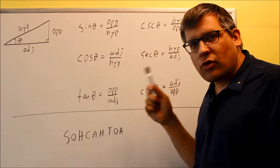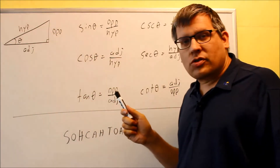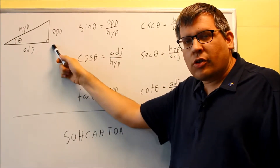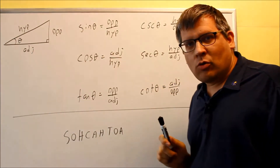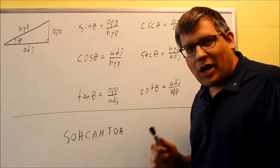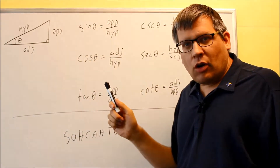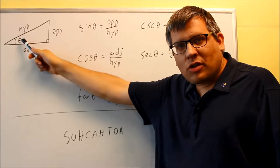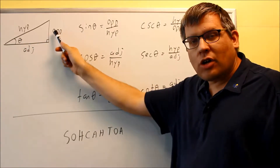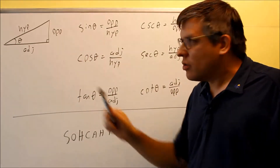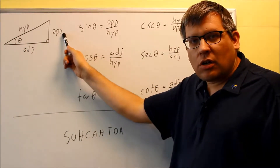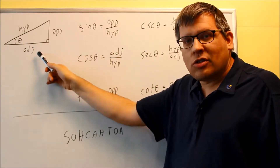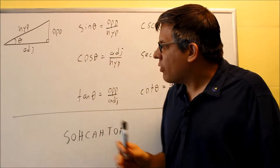In order to use these definitions, we first have to label the triangle accordingly. The longest side of the triangle, opposite the right angle, is always labeled as your hypotenuse no matter what. For the opposite and adjacent sides, it depends on what angle you're actually looking at. Your opposite is always the side directly across the triangle from that angle. Your adjacent side is the other side — right next to the angle itself. Adjacent means right next to.